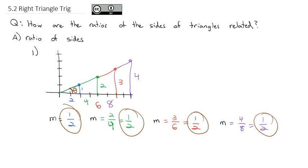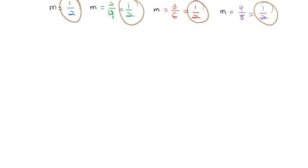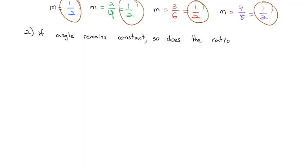That's the idea of the ratio of sides we're looking at today — regardless of the size of the triangle, if that angle stays the same, the ratio will also always stay the same. So to state that: if the angle remains constant, so does the ratio of the sides. For example, if I draw a triangle and keep this angle theta the same, the ratio of the sides will be exactly the same, regardless of how big the triangle is, as long as that angle doesn't change.